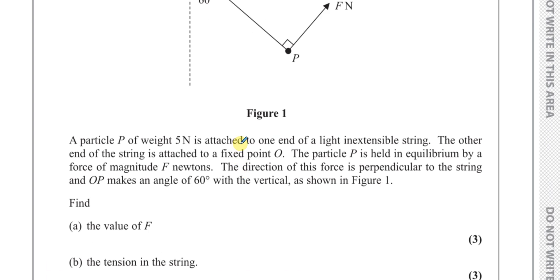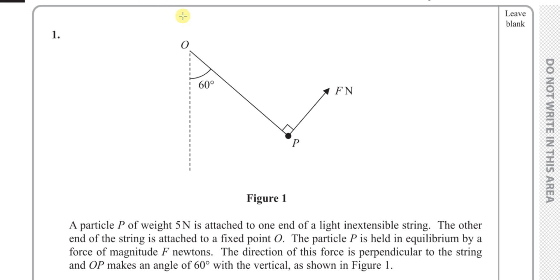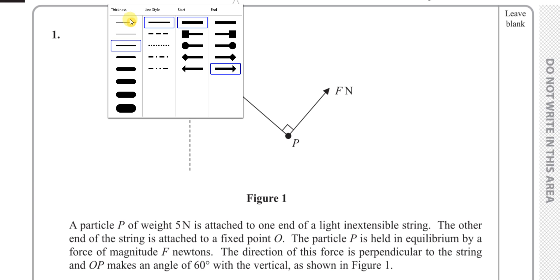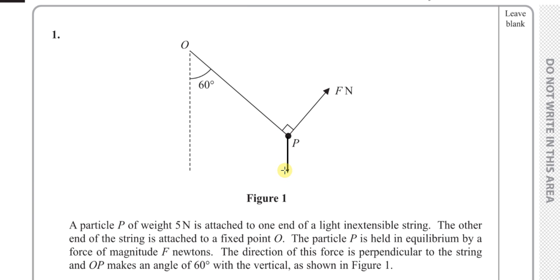We can do both at the same time. The forces acting upon this particle are its weight, acting straight vertically downwards, which is 5 newtons. Sometimes they give you the mass, in which case it would be mass times g newtons, but this is actually giving you the weight itself. There's also going to be a tension in this string, acting on the particle in that direction. Those are the forces keeping this in equilibrium.